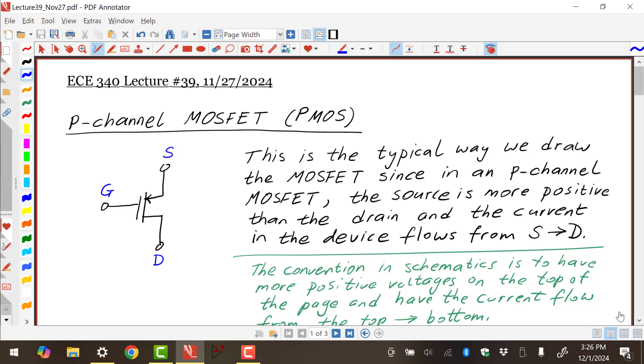So here we're going to talk about the current versus voltage characteristics of the PMOS, which is going to be very similar to the N-channel device. Typical P-channel MOSFETs are drawn as shown with the source on top and the drain on the bottom because the normal path of current flows from source to drain, and also the source is more positive than the drain in typical modes of operation. The convention in schematics is to have the higher voltages on top of the page and lower voltages on the bottom of the page, and for the current to flow top to bottom on the page.